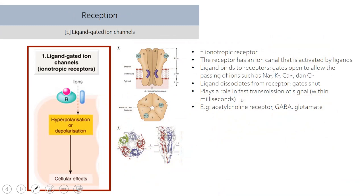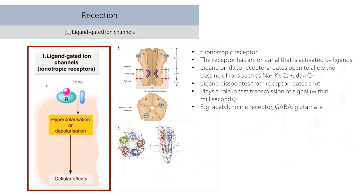The ligand-gated ion channel, also called an ionotropic receptor, is a channel connected to a gate that depends on whether a ligand is present. When a ligand binds, the receptor opens the gate, allowing the influx of ions. Depending on the ion, this causes either hyperpolarization or depolarization inside the cell, creating cellular effects. Because it is a very fast process, this mechanism is often found with acetylcholine receptors, GABA receptors, and glutamate receptors — all receptors for neurotransmitters involved in rapid neurotransmission.